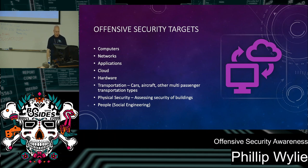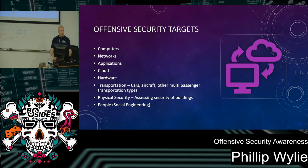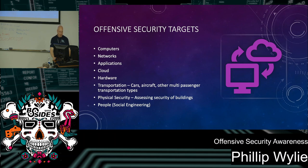There are different types of targets when you're doing a pen test, and this is growing by the year with new technologies: computers, networks, apps, cloud, transportation, physical security, and people. Companies can have really good endpoint detection and complex passwords, but if someone sends malware through an email and a user opens it, it doesn't matter how secure your environment is — someone gains access as that user. Same with physical security: if someone walks into a data center or accesses a logged-in desktop, they already have access without needing many hacking skills. You really want to make sure you're testing people and physical security because these are often overlooked.